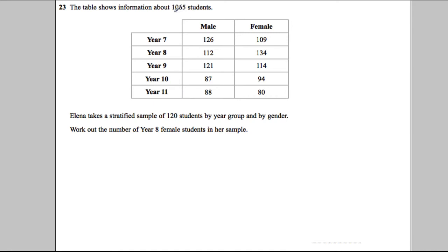A table shows information about 1065 students. Eleanor takes a stratified sample of 120 students by year group and by gender. We need to work out the number of year eight female students in her sample. To do this, we'll first work out the sampling fraction: we have 1065 students and want a survey of 120.